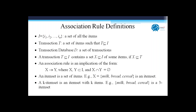An association rule is of the type: one item set implying another item set. This means that if customers have bought the items in the first set, they are highly likely to also buy the items in the second item set. It's about high likelihood, because from the history in past transactions in the transaction database, that pattern has been shown to hold.